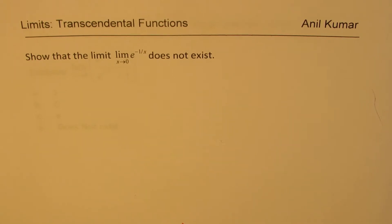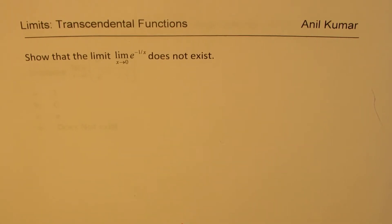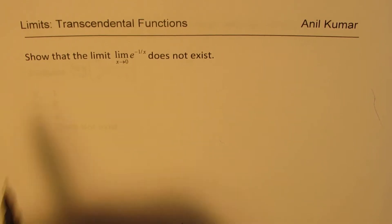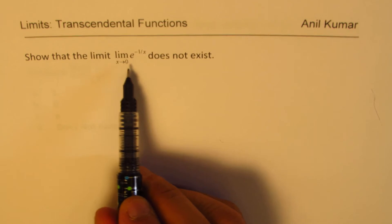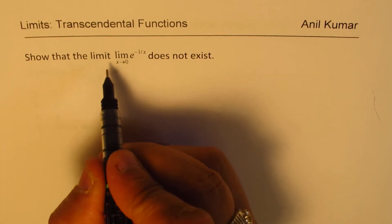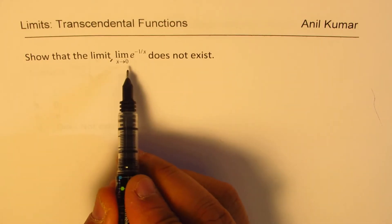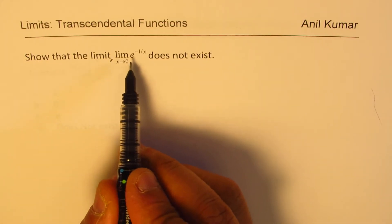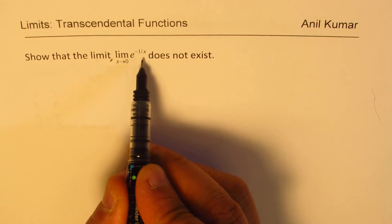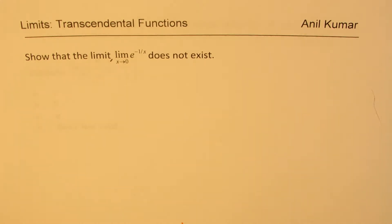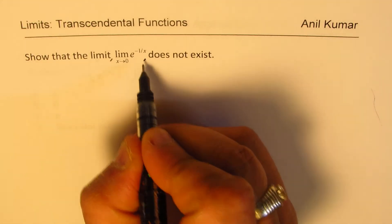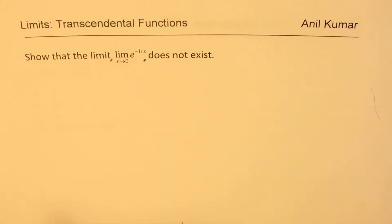I'm Adil Kumar sharing with you a very basic question on limits of exponential functions. The question is: show that the limit as x approaches 0 for e to the power of minus 1 over x does not exist for this particular function.